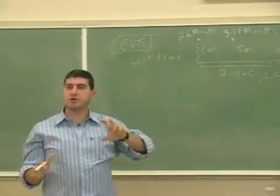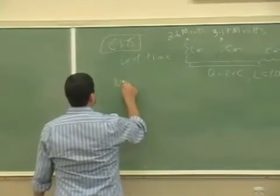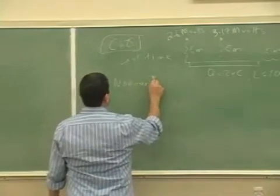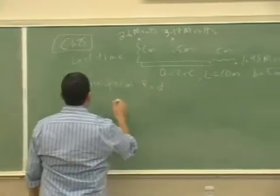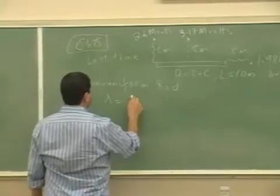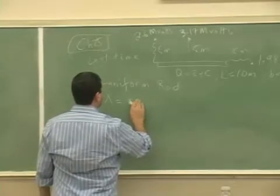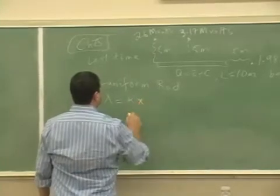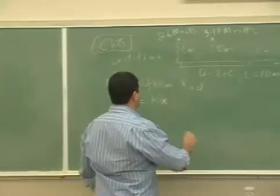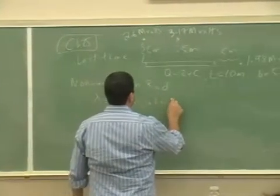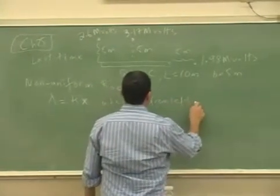Now what we could do is a similar rod but with non-uniform charge density. Let's say its linear charge density is increasing, kappa times x.